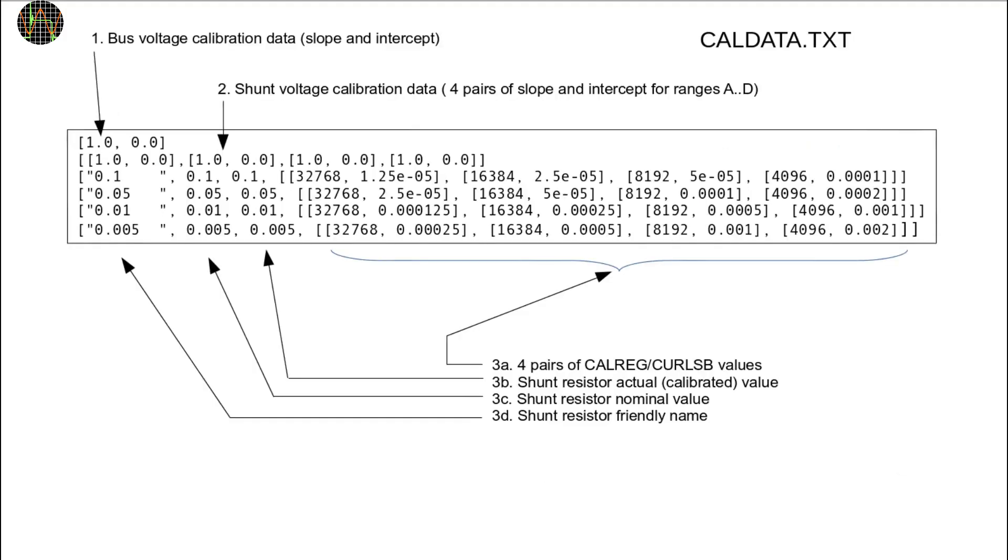This is the content of the new caldata.txt file. As before, the 1.0 and 0.0 for slope and intercept means no calibration, so the measured values will be used unchanged.